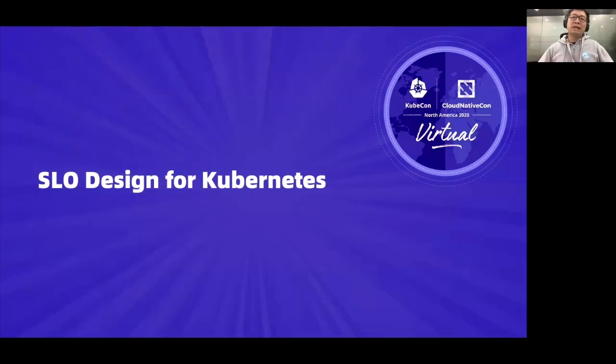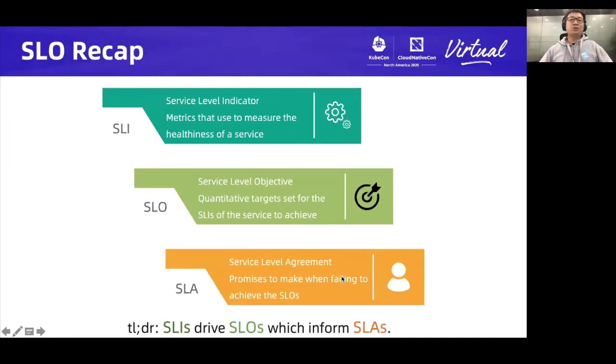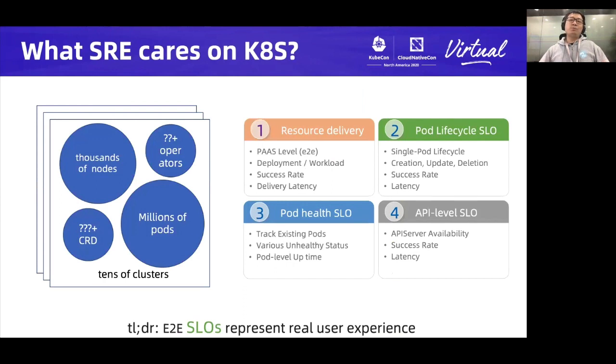Hi everyone, I'm Tong, and I'm going to talk about the SLO design for Kubernetes. First, let's do a quick recap on the definition of SLOI, SLO, and SLOA. SLOI is a metric that you use to measure your service healthiness. For example, for HTTP server, it can be request error ratio or average request latency. SLO is the quantitative target that you and your team try to achieve. For example, one can target 99% success ratio for HTTP request in a month. Finally, SLOA is the promise you make to your user, like what would the user expect to receive when you broke the SLO. Sometimes internally, the word SLO and SLOA are interchangeable.